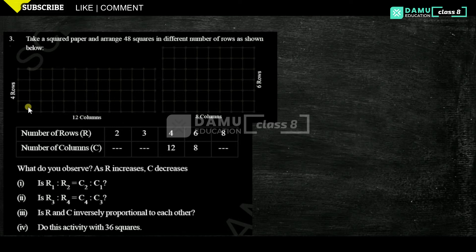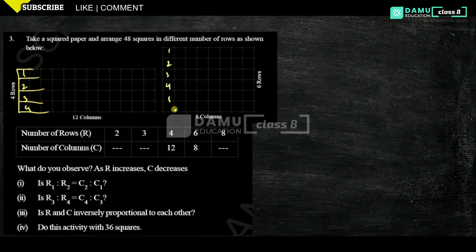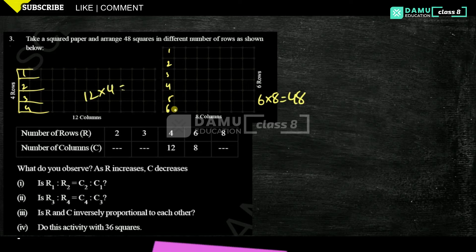Here they are arranged 4 rows — 1, 2, 3, 4, like this. There are arranged 6 rows with 8 columns. So 6 into 8 equals 48. Then 12 into 4 equals 48. We are getting like that.